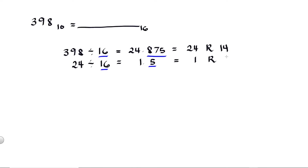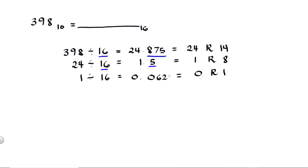Then we take 1 and divide it by 16. Since 1 is less than 16, the answer is 0 and the remainder is 1. To confirm, we divide 1 by 16, which gives 0.0625. 0 goes here, and if we multiply 0.0625 by 16 the answer is 1.